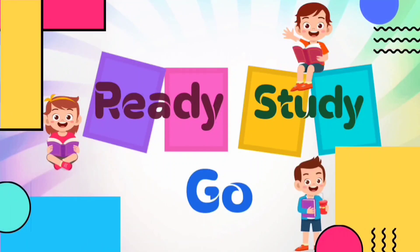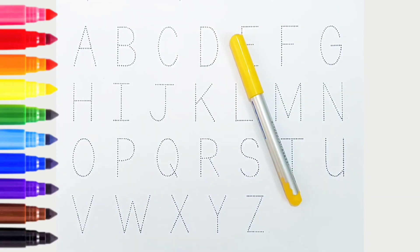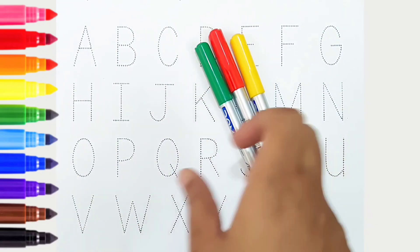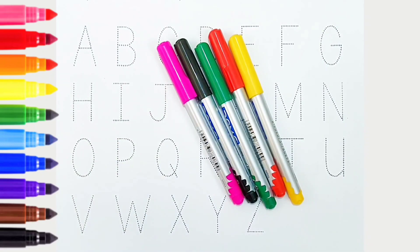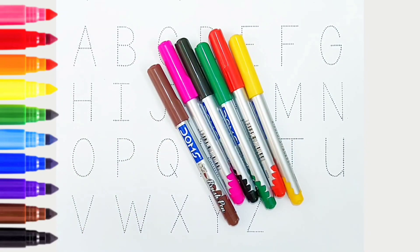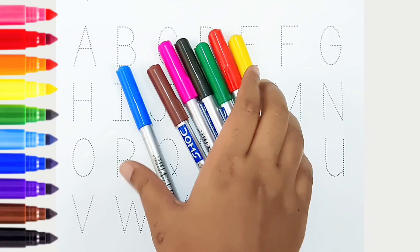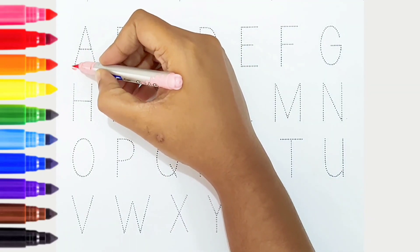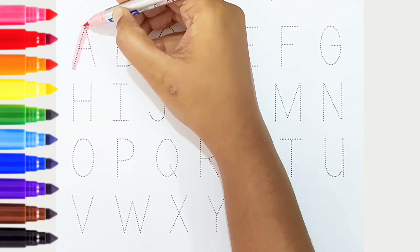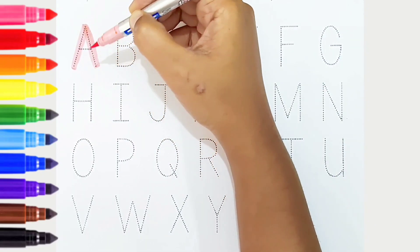Ready, study, go! Yellow color, red color, green color, black color, pink color, brown color, blue color. Hi kids, today we can learn the alphabets from A to Z. Let's begin! A, light pink color, A is for apple.